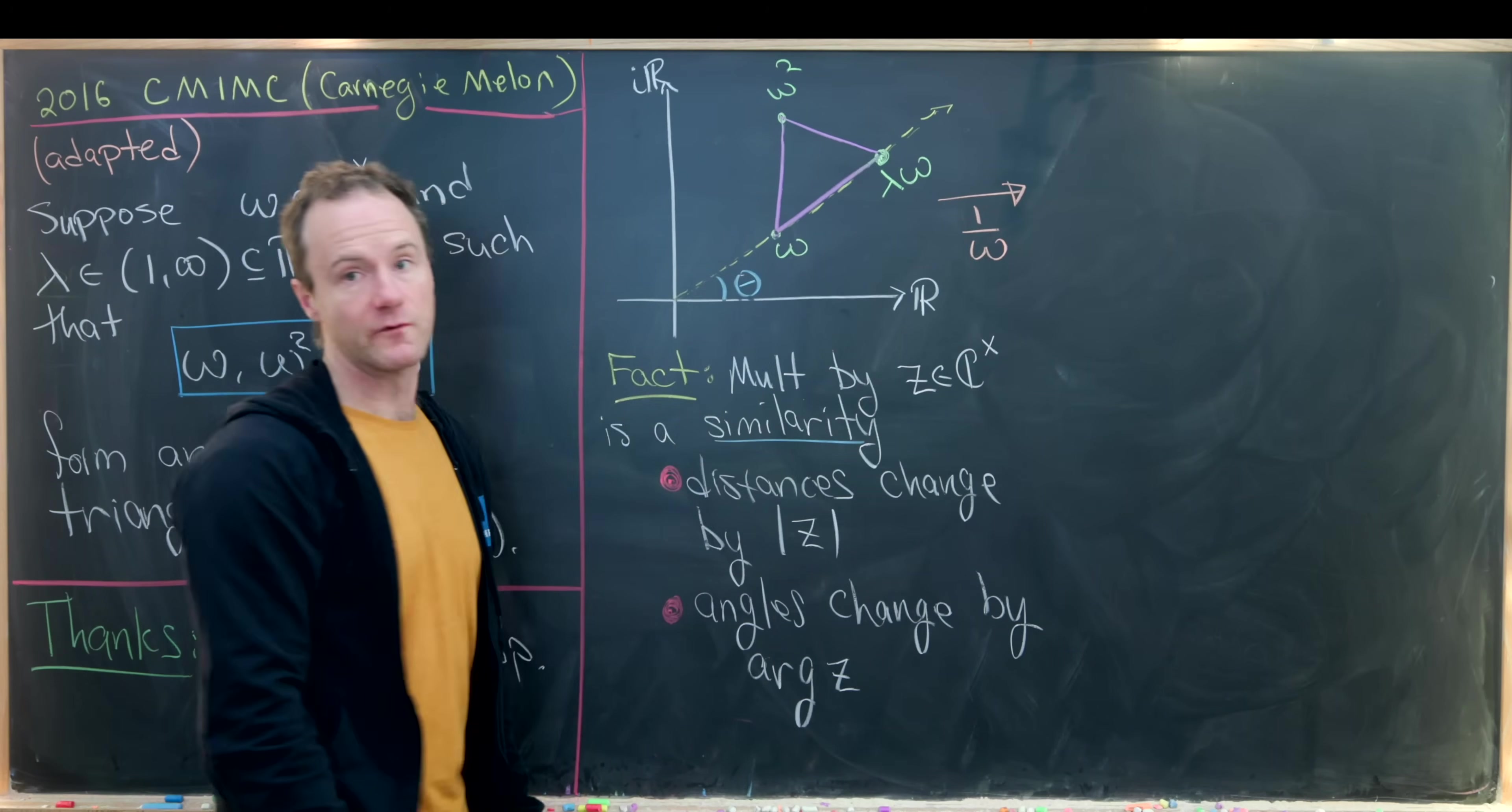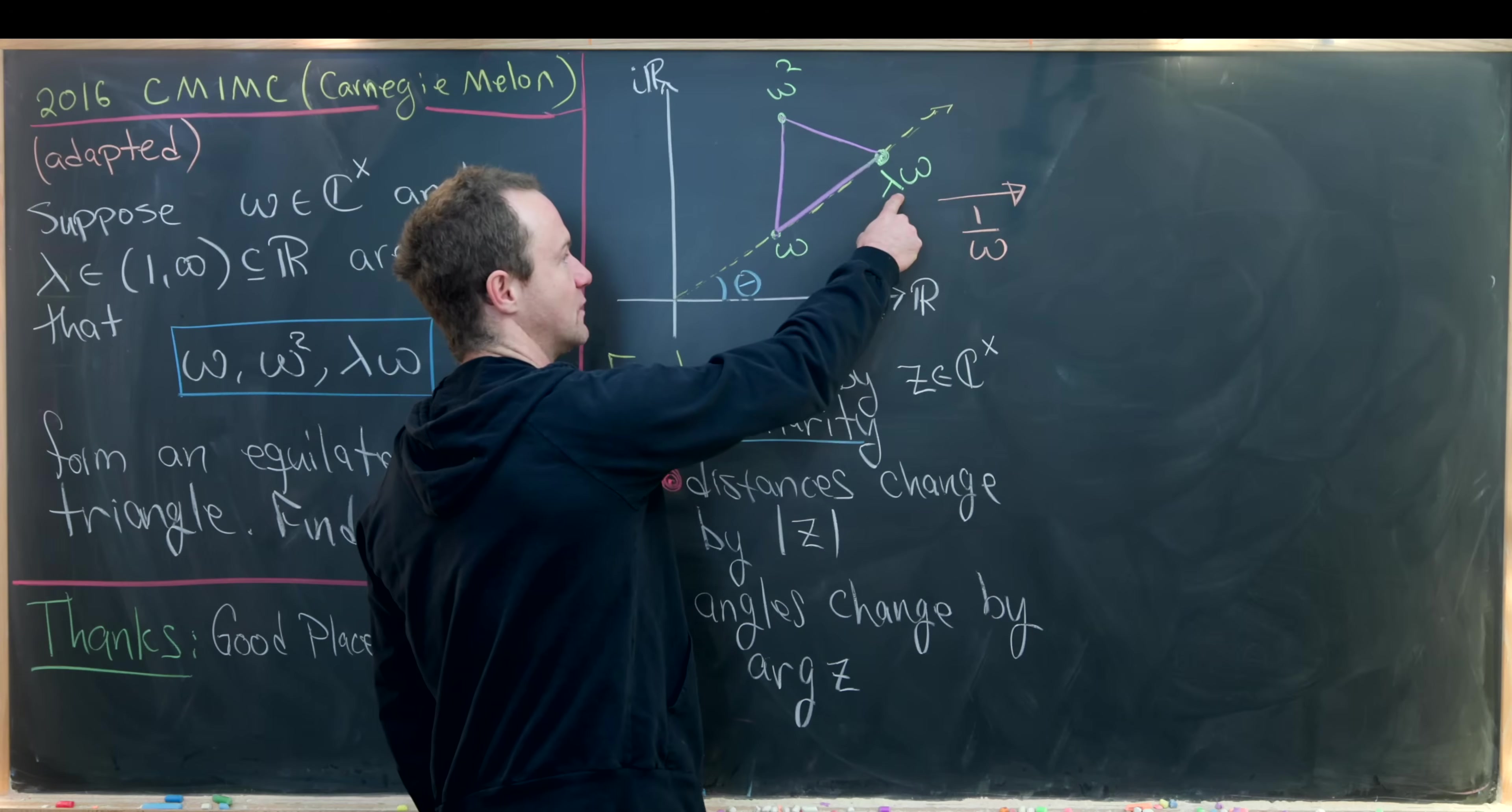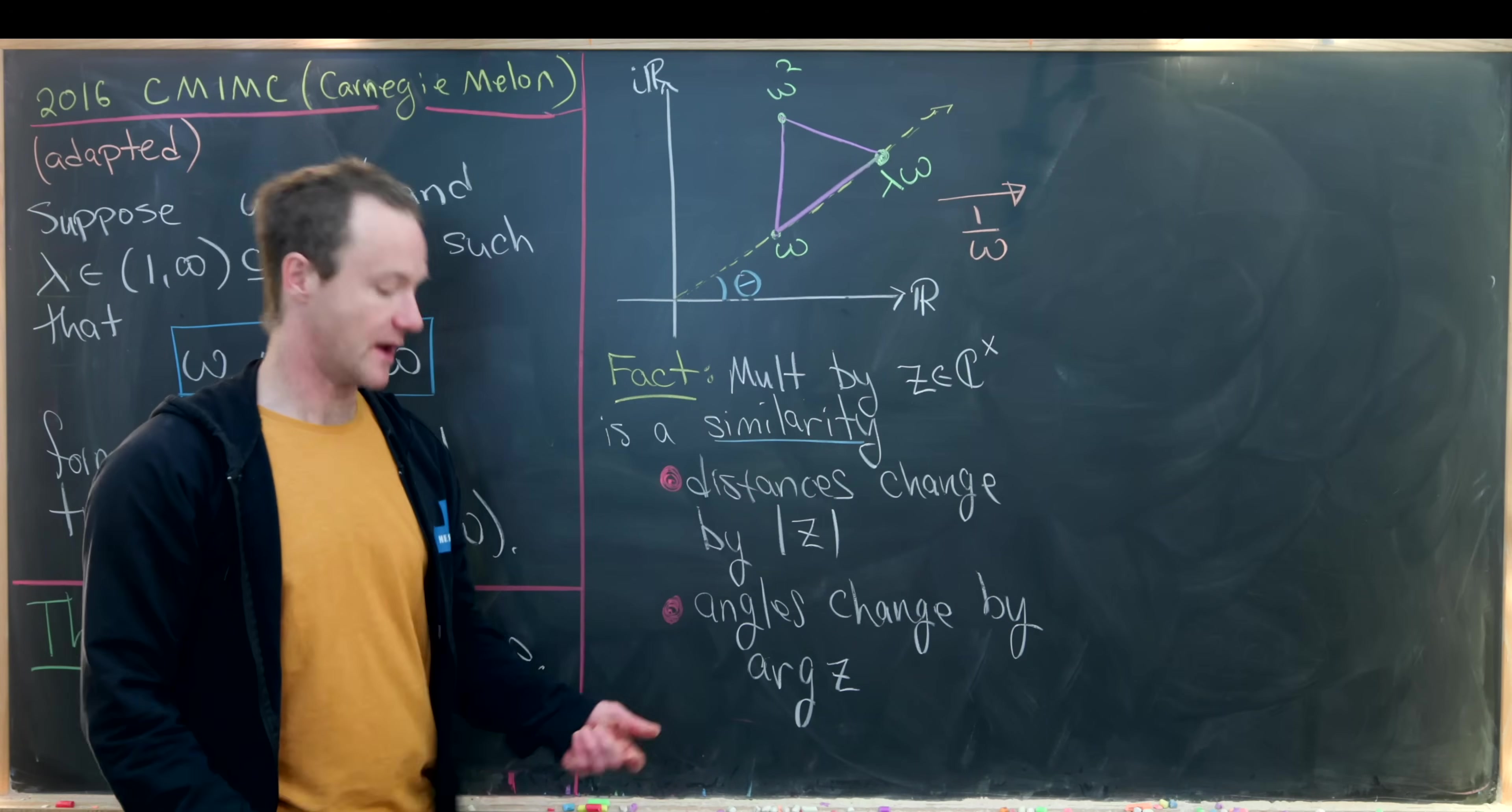So let's see what multiplying by 1 over omega will do. So it'll rotate everything by negative theta. That's because it's 1 over omega. And then it'll scale everything by omega. So this will go to the point 1 on the real axis. This will go to the point lambda on the real axis. And then omega squared will become omega. Okay, so let's draw that picture over there.